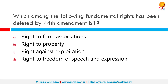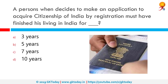Which among the following fundamental rights has been deleted by the 44th Amendment? The correct answer is the right to property. By the 44th Constitutional Amendment Act in 1978, the right to property was taken away from the category of fundamental rights and made a legal right. Article 19(1)(f), which guaranteed citizens the right to acquire, hold, and dispose of property, and Article 31 relating to compulsory acquisition of property, were omitted. It was ensured that removal of property from the list of fundamental rights would not affect the right of minorities to establish and administer educational institutions of their choice.